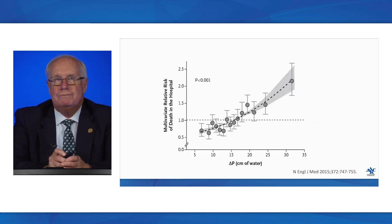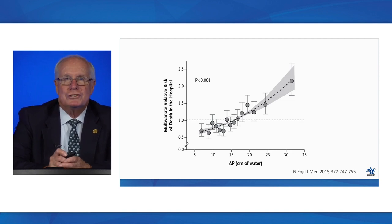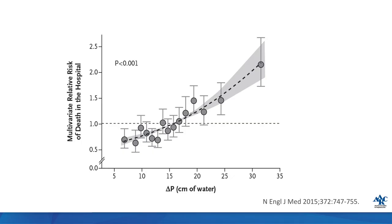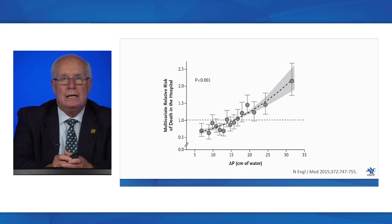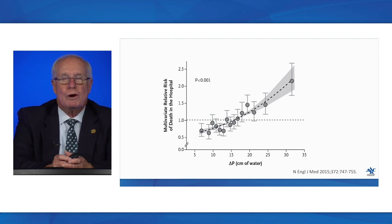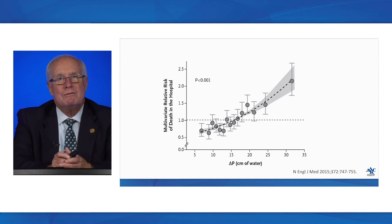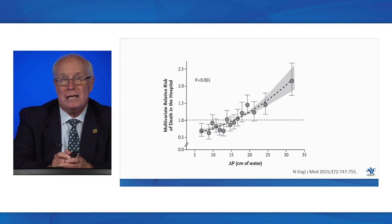What's a safe driving pressure? The short answer is we don't know. A widely-quoted retrospective study by Marcelo Amato — not a study designed to look at tidal volumes but at PEEP — was able to plot driving pressure versus mortality from the available data. Mortality risk starts to increase above a driving pressure of around 15 cmH2O. So at present, 15 cmH2O seems to be a reasonable threshold, though as more data are collected that recommendation may change.